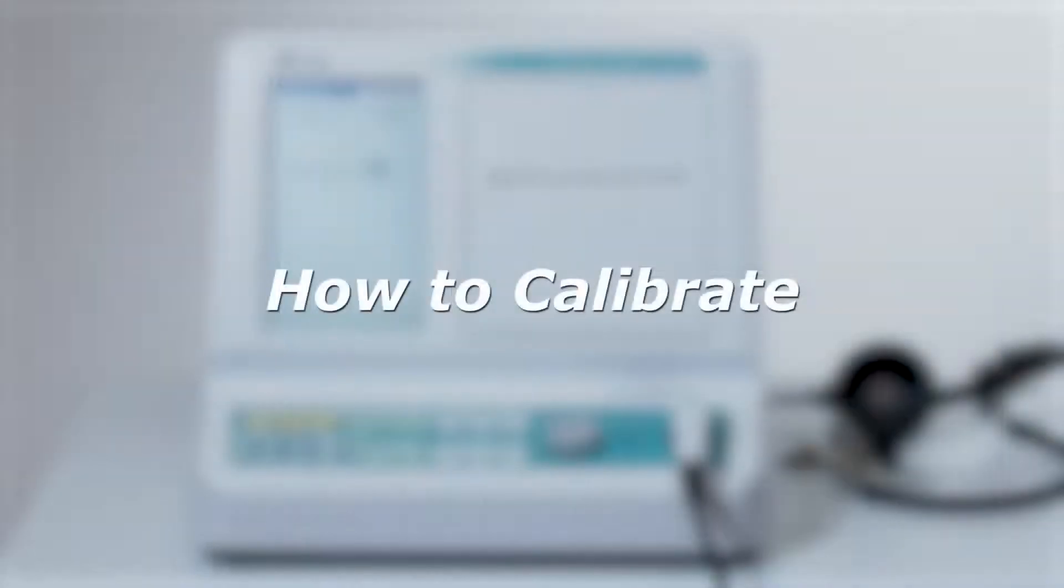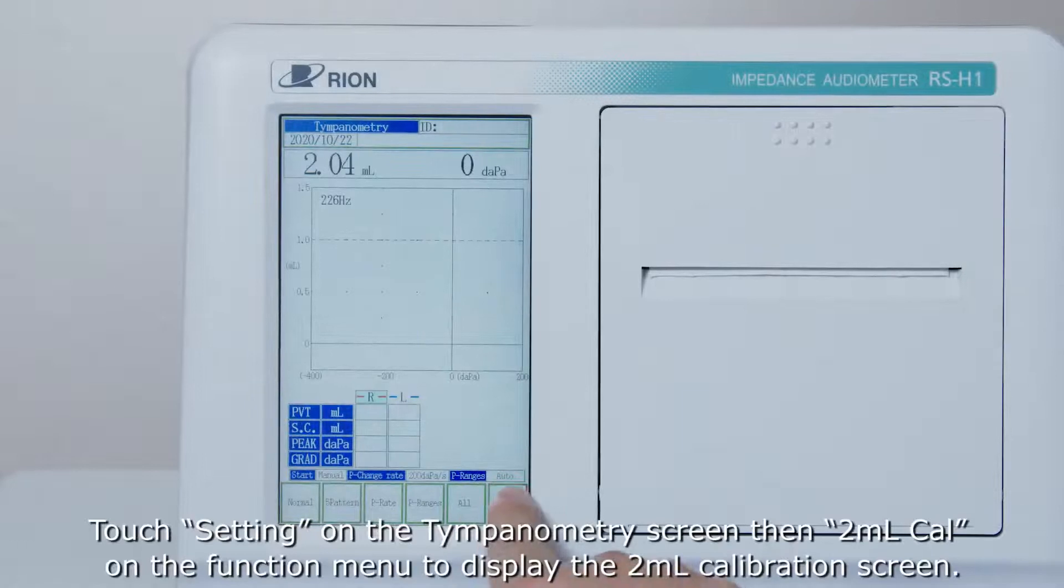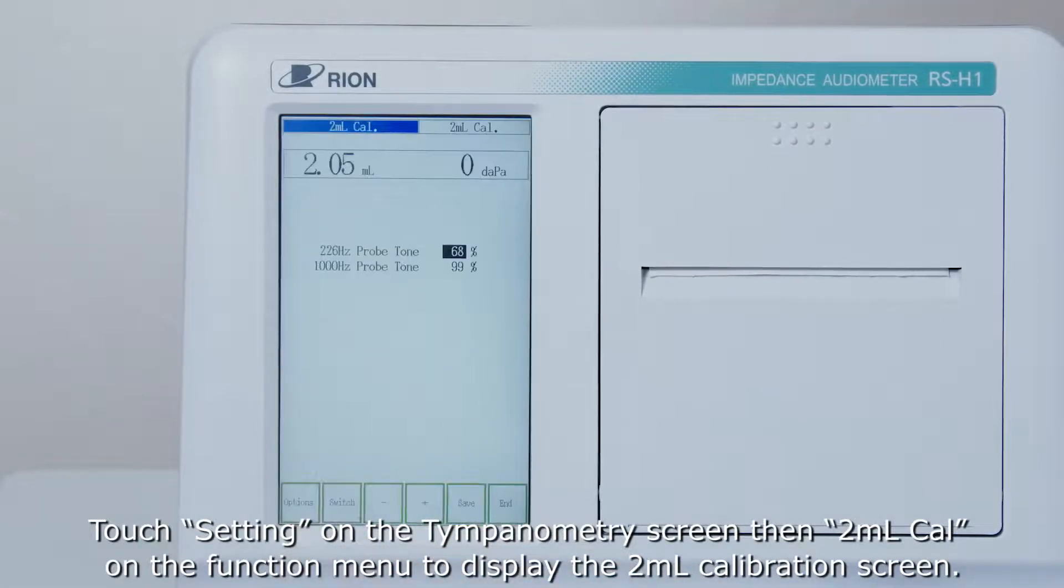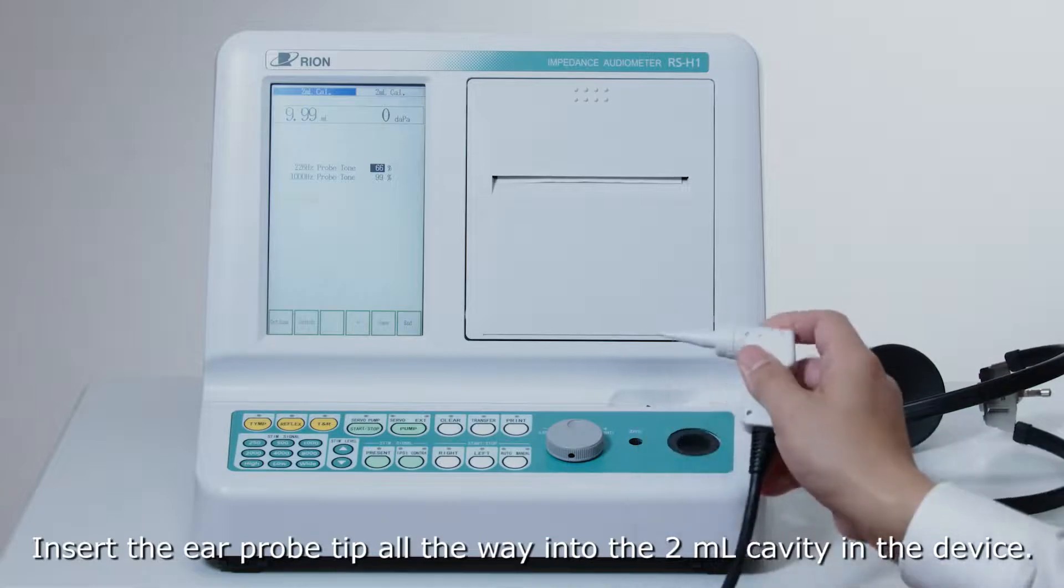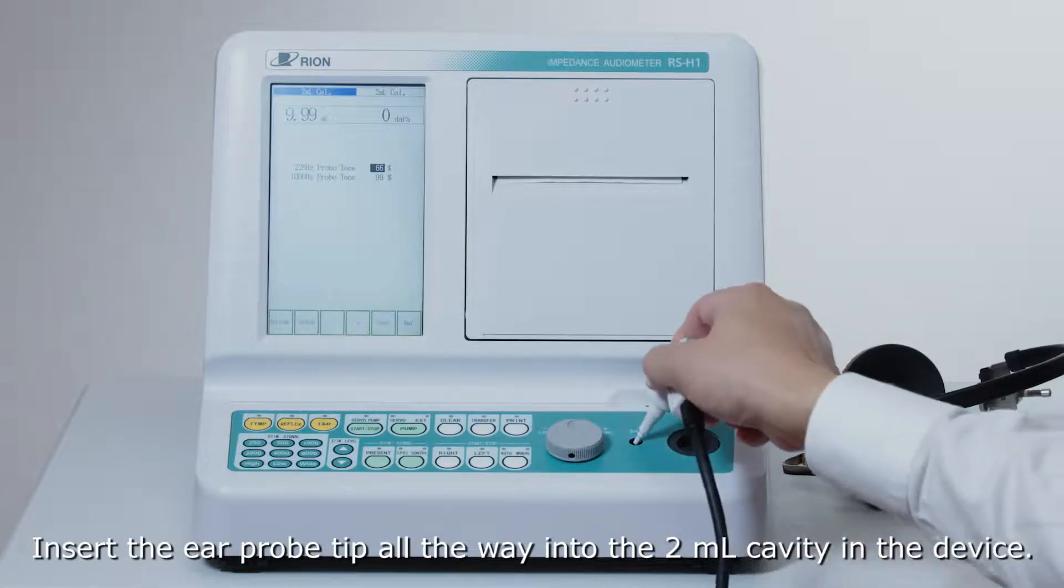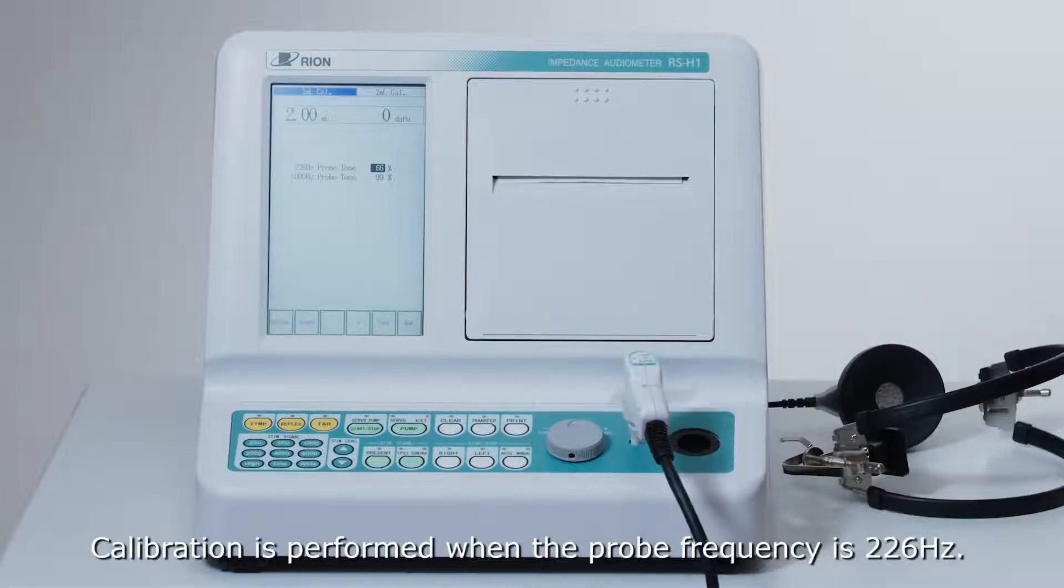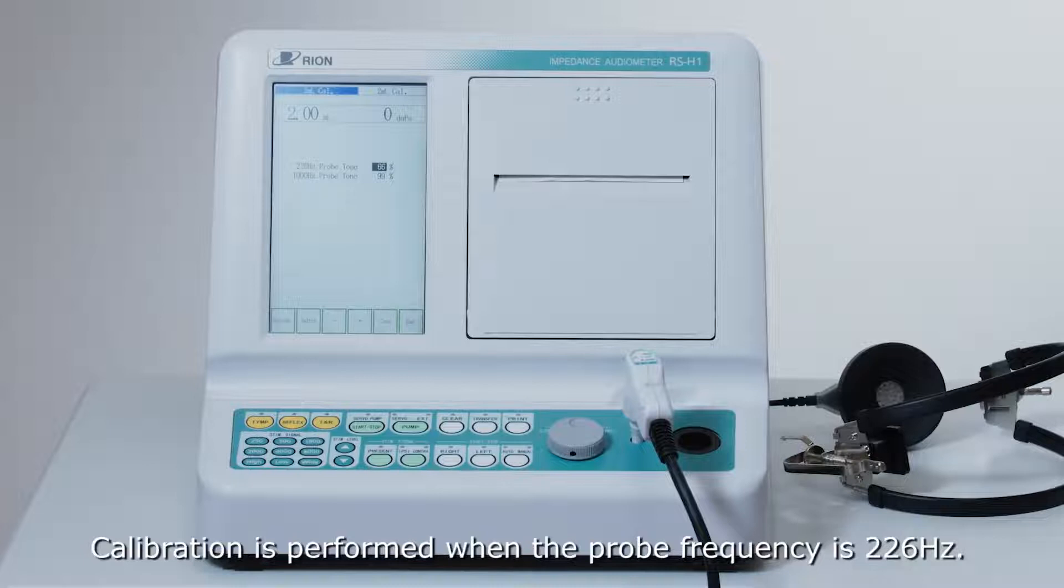How to calibrate. Touch setting on the tympanometry screen, then 2ml cal on the function menu to display the 2ml calibration screen. Insert the ear probe tip all the way into the 2ml cavity in the device. Calibration is performed when the probe frequency is 226Hz.